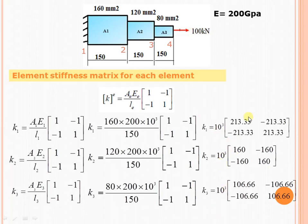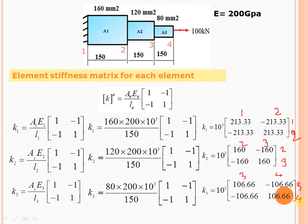We can also write the elemental connectivity. Element 1 is connected between nodes 1 and 2, so we write connectivity as 1-2. Element 2 is connected between nodes 2 and 3, written as 2-3. Element 3 is connected between nodes 3 and 4, written as 3-4. This connectivity is important because when writing the global stiffness matrix, it is required to properly assemble the elemental stiffness matrices.